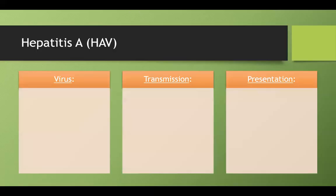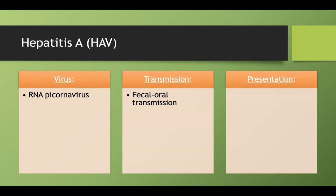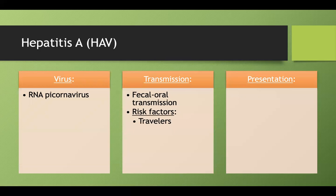Starting with hepatitis A — an RNA picornavirus transmitted fecal-orally. Hep A and E are both fecal-oral transmission, remembered because they're the front and back of our alphabetical hepatitis, just like fecal-oral is the front and back of our GI tract. Risk factors include travelers to endemic countries, daycare settings, and shellfish consumption.